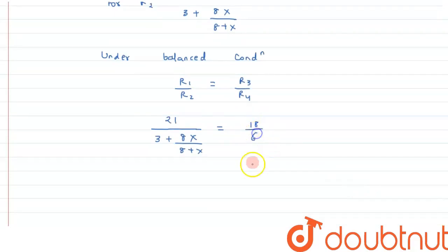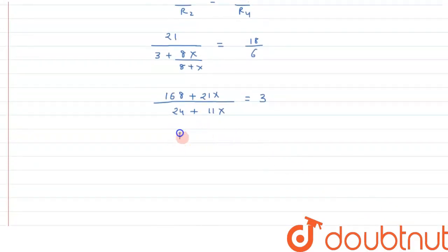If we solve it further, we can write this can be done as 168 plus 21X, just we are doing the cross multiplication part, and here it can be written as 24 plus 144X, and that is equals to 3. Solving it further we can write 168 plus 21X, and that is equals to 72 plus 33X.